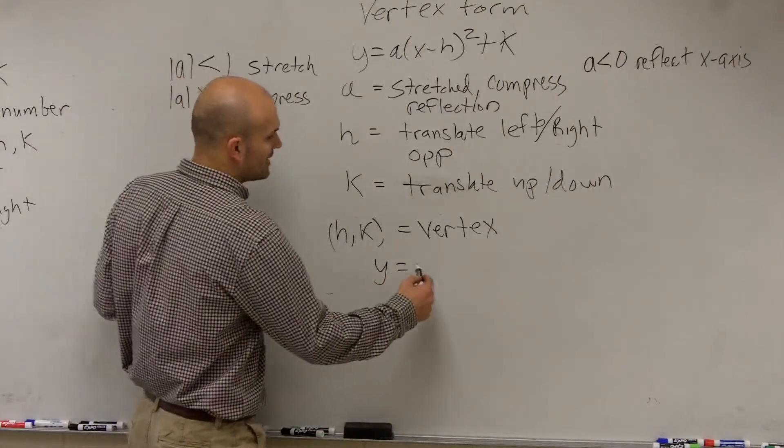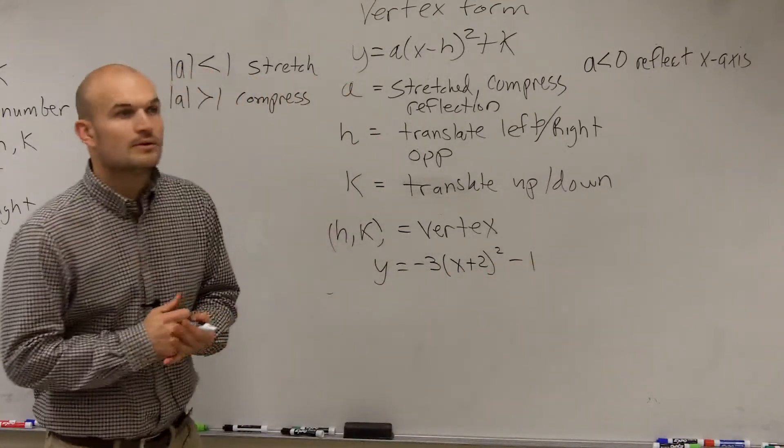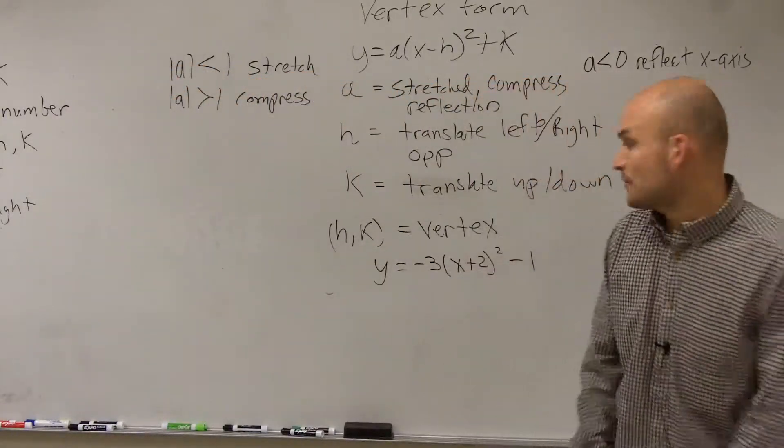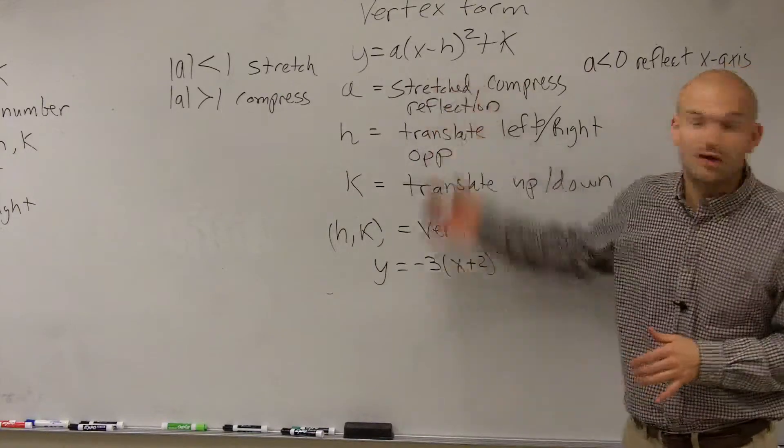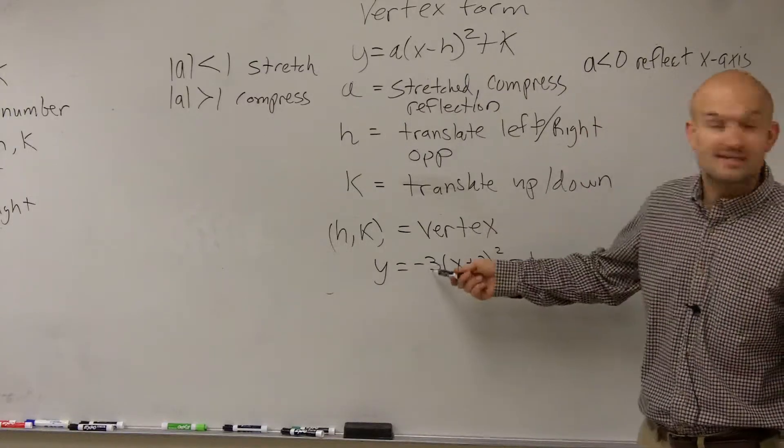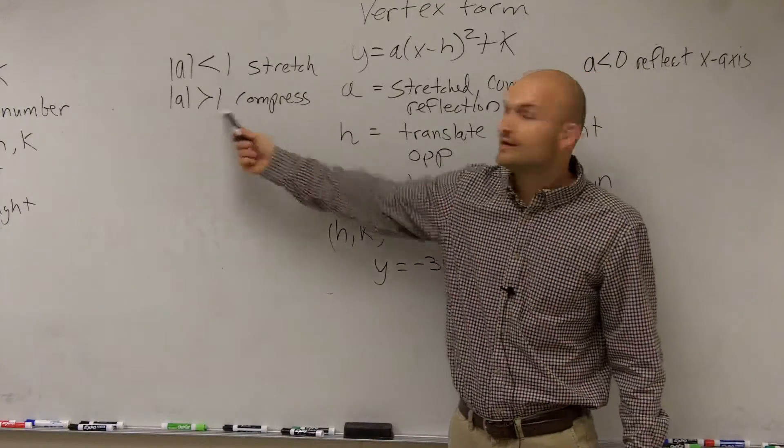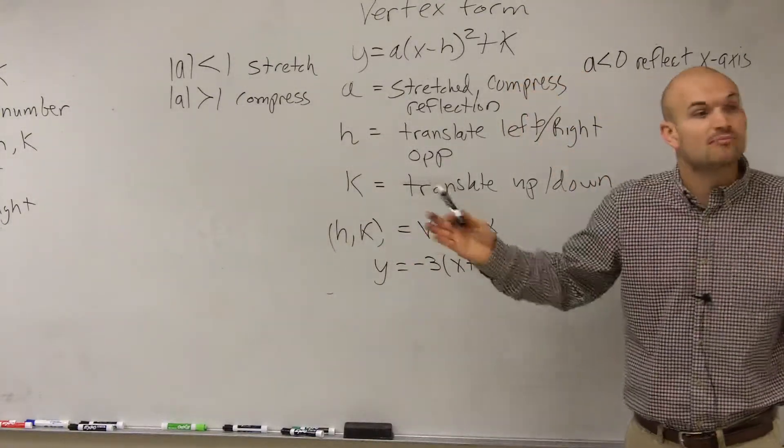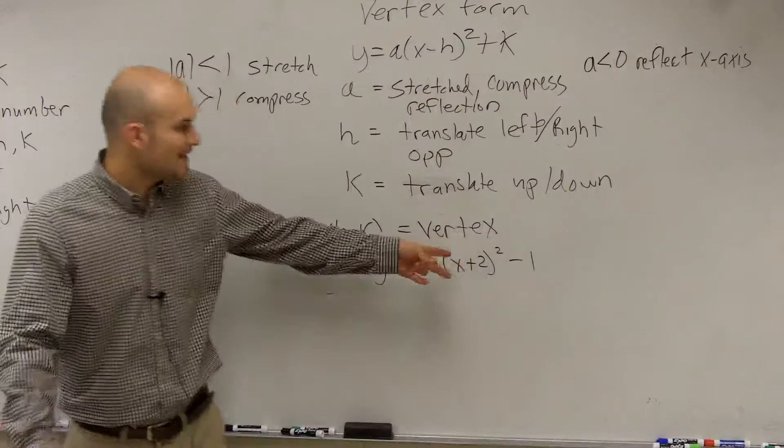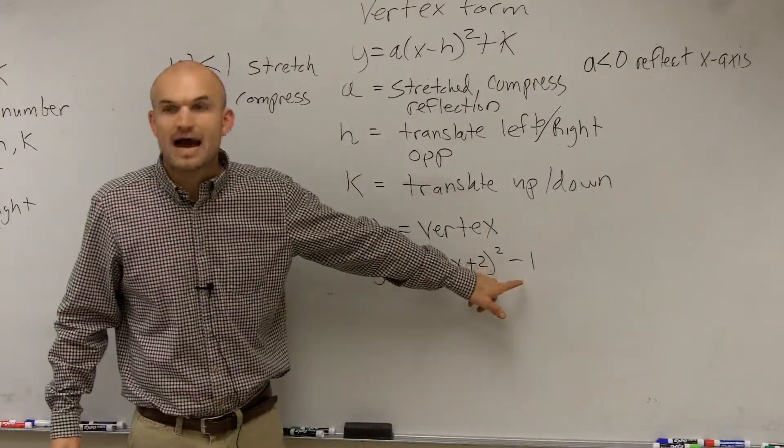Let's take a look at an example. If I say y equals negative 3x plus 2 squared minus 1. Yes. So let's say I give you this example problem. Let's kind of run through real quick what I just went over, how we could describe this graph. First of all, we look at a. Since it's less than 0, we could say that this graph reflects the x-axis. Since the absolute value of a is greater than 1, we can say this graph is compressed horizontally. Then we look at h and k. We could say that this graph is shifted two units to the left, and the graph shifts down one unit.